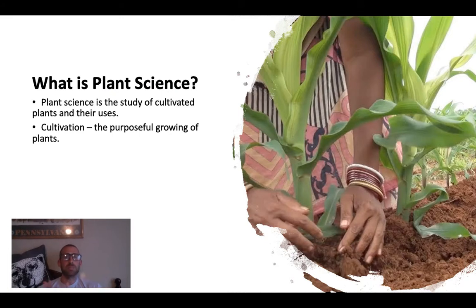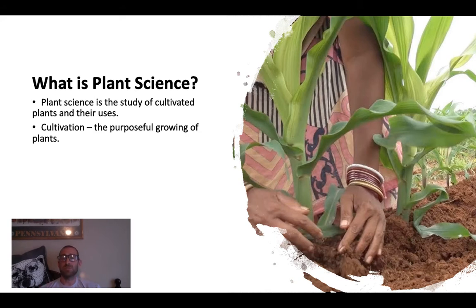So what is plant science? Plant science is the study of cultivated plants and their uses. That word 'cultivated' is really important because it's what sets plant science apart from other courses or subjects related to this. We tend to think of botany as a study of plants, whereas plant science is more specific — it is the study of cultivated plants.